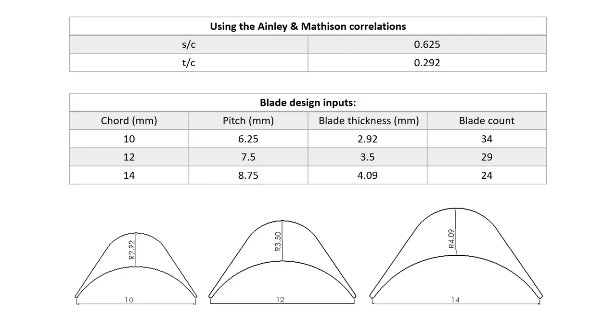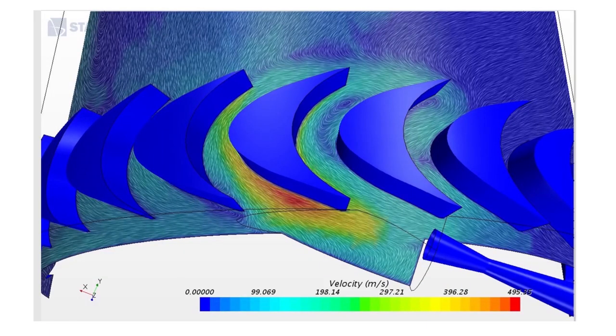From the correlations we acquired, our pitch-to-chord ratio was found to be 0.625 and our maximum thickness-to-chord ratio was found to be 0.292. By setting the chord length as our input, the following blades were produced.